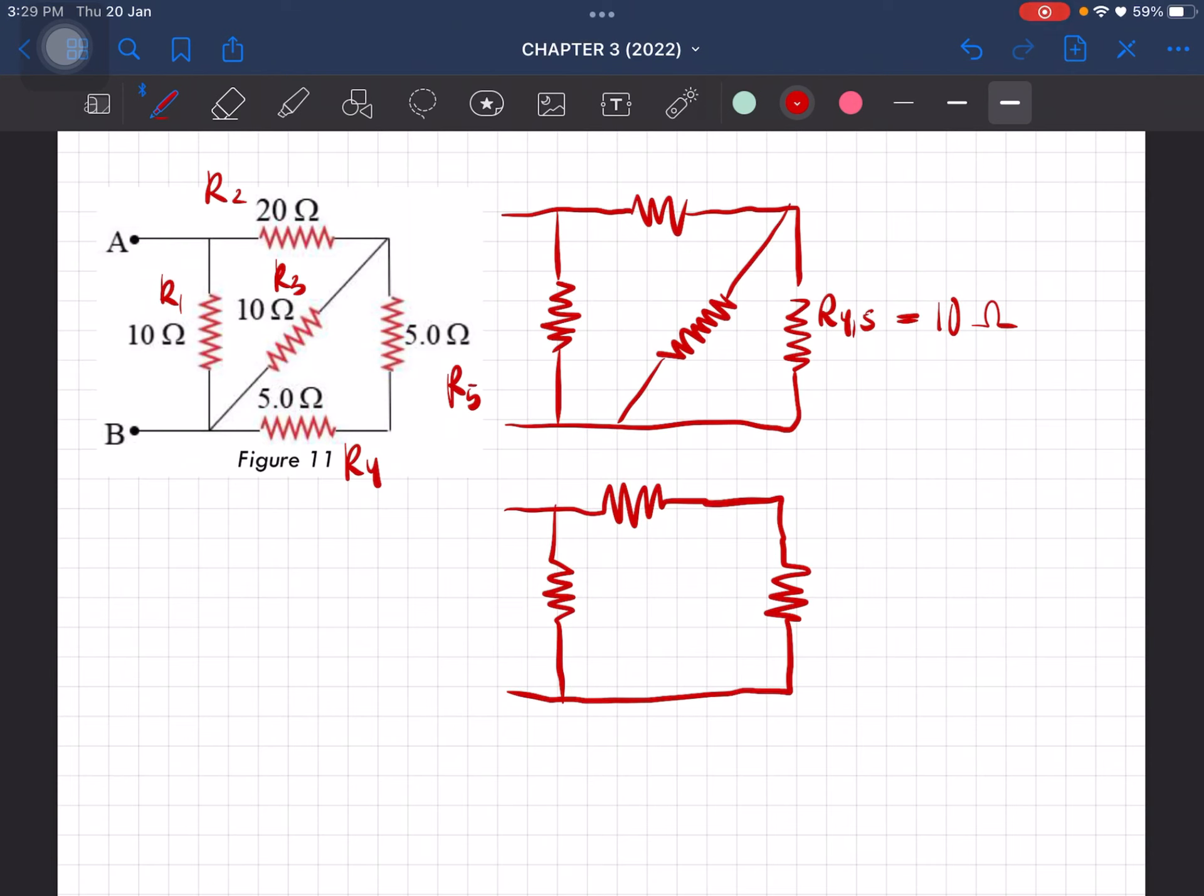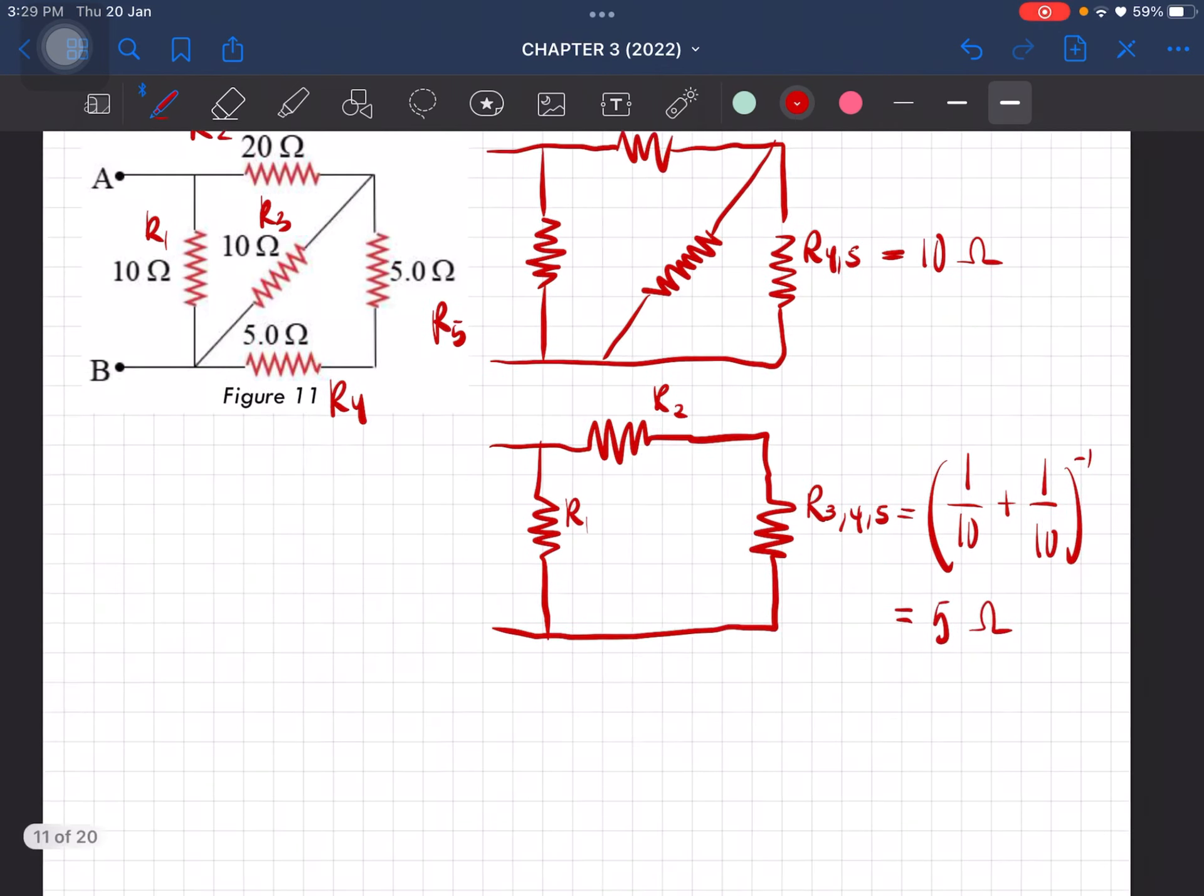So this is gonna be equal to R3, 4, and 5, and then this is R2, this is R1. So R3, 4, 5 here is connected in parallel. So this is gonna be equal to 1 over 10 plus 1 over 10 to the negative 1. So that will be equal to 5 ohm.